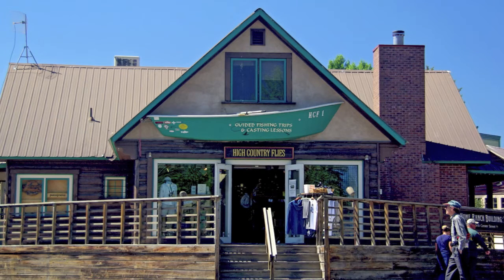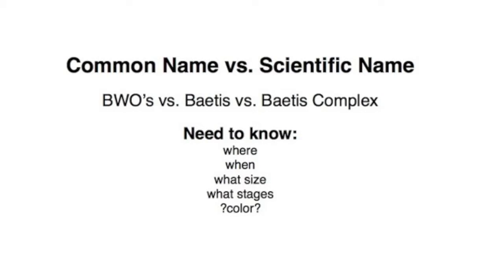The easiest way to learn about and fish with mayflies is to simply ask at the fly shop. They'll tell you which mayflies are currently hatching, which patterns are currently useful, and they'll be happy to sell you these flies. If those flies work, take them home and use them as patterns for tying. Whether they use the common name or the scientific name, as long as you know where, when, what size, and what stage to fish, you should be fine.